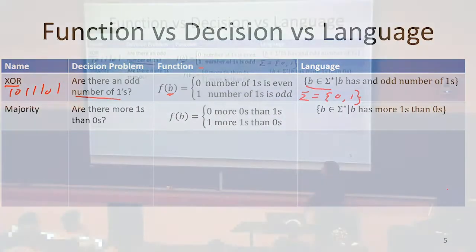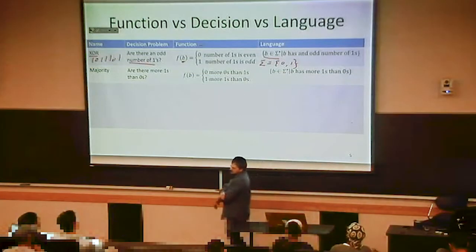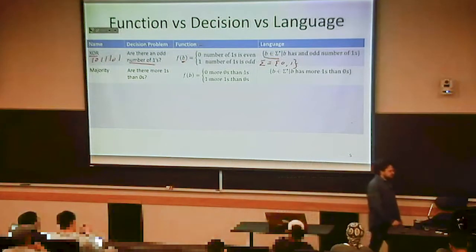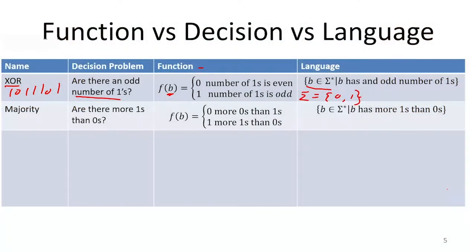Or if we talked about majority — given a bunch of bits, we want to know if there are more ones than zeros in the bit string. As a decision problem, it asks: are there more ones than zeros? As a function, it returns zero if the string has more zeros than ones, or equal; and it returns one if there are more ones than zeros. As a language, it's the set of all strings such that the string has more ones than zeros.